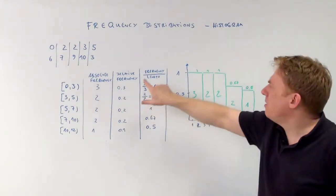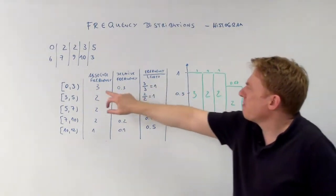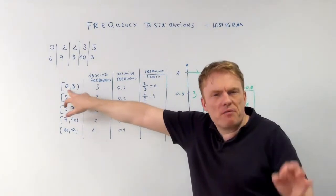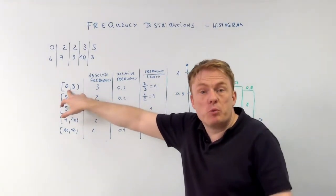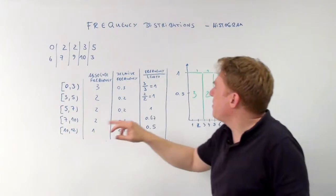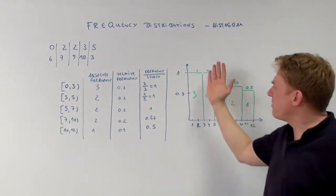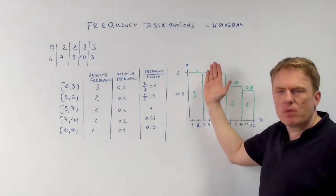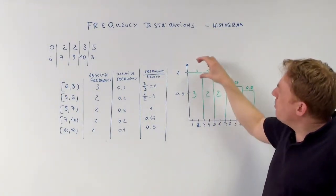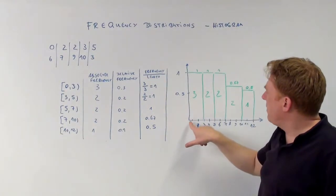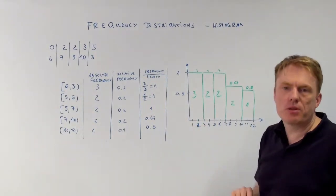Absolute frequency divided by length, which means 3 divided by the length of this interval going from 0 to 3, which means 3 divided by 3 equal to 1. Which means that the first bar will have a height of 1, computed here, and goes from 0 to 3.